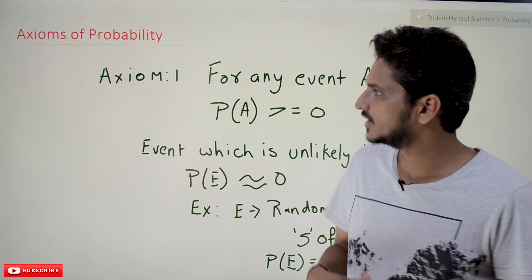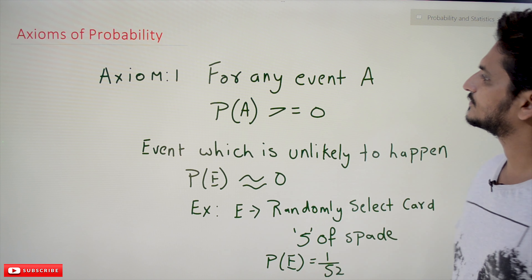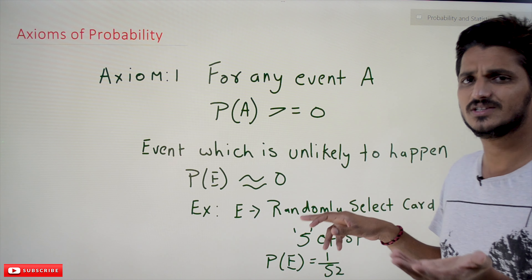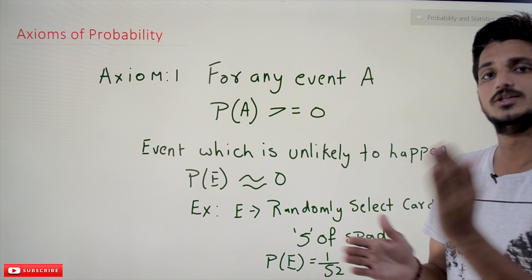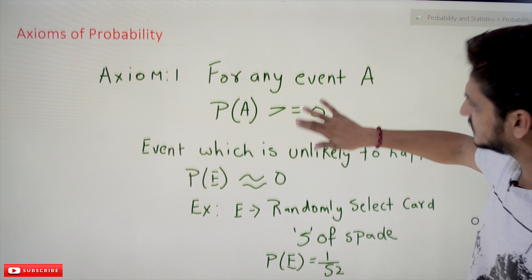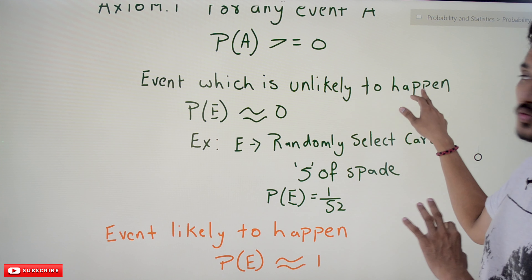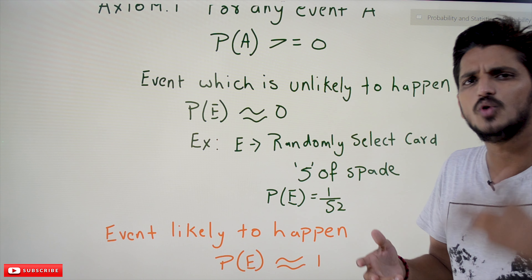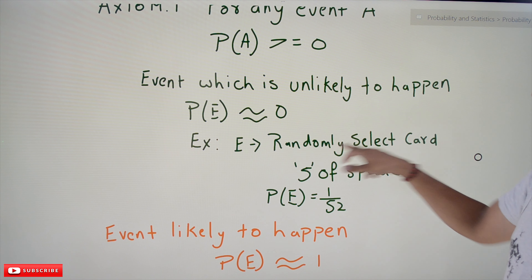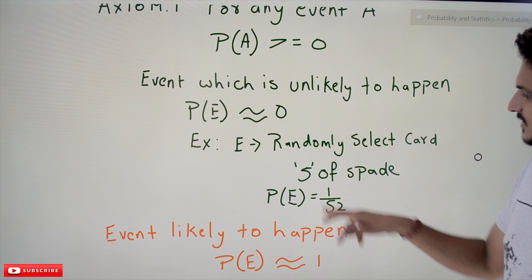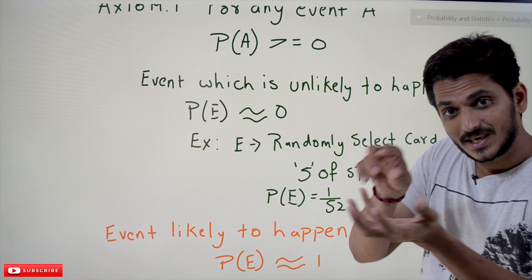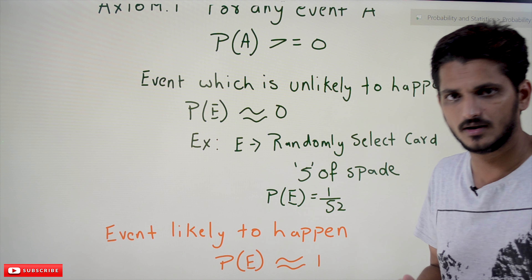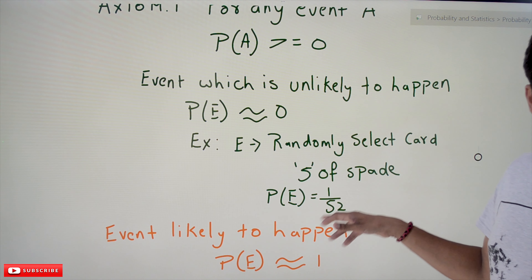Coming to today's class: Axiom 1 — for any event A, probability of A is always greater than or equal to 0. In our previous classes we clearly discussed that probability value always lies between 0 and 1. An event which is unlikely to happen will have probability almost near to 0. For example, randomly selecting a 5 of spades from a deck of 52 cards — there is only one possibility, so the probability is 1/52, which is almost near to 0.